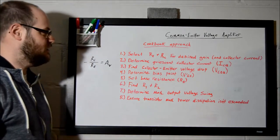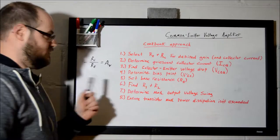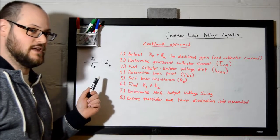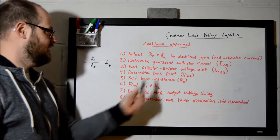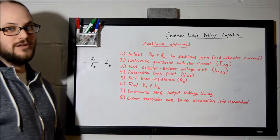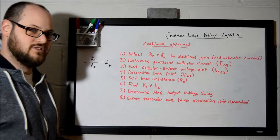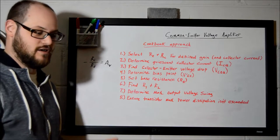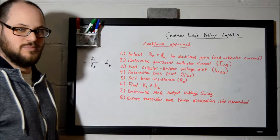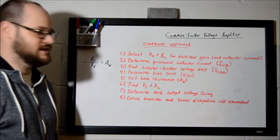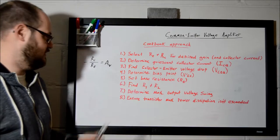Step two. Determine quiescent collector current, ICQ. That comes from your collector and emitter resistors. Because, if you remember the schematic drawing that I put up earlier, it runs through both of those. That is ultimately going to determine your collector current. Quiescent, it's probably a new term for some of you. All that means, is that is your idle state of the amplifier. You're not putting any input signal in. It's just sitting there. All of its DC levels found where they're going to be. And, it's idling. Like, a car is idling.